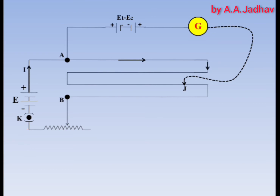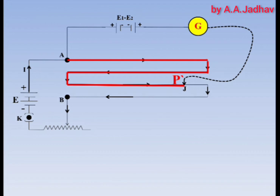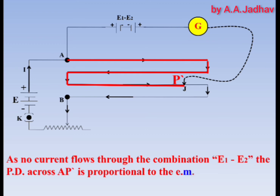By touching the jockey at different points on the potentiometer wire, null point P dash is obtained for which the galvanometer shows null deflection. The potential at point P dash is equal to the potential at the positive terminal of cell E2, meaning no current is drawn from the cell combination — the combination acts like an open circuit. The length of wire between points A and P dash is called the balancing length for the difference combination.